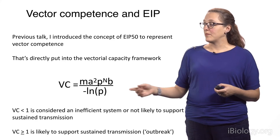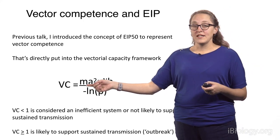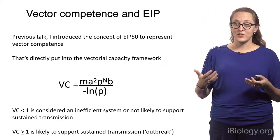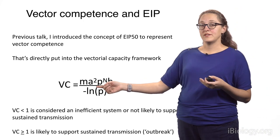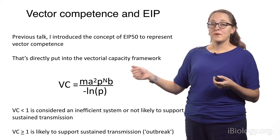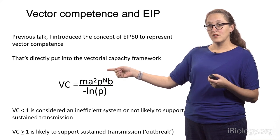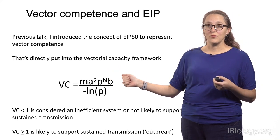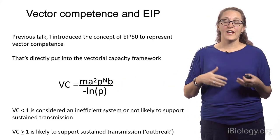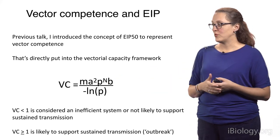Vectorial capacity is here — this is the equation. M is the mosquito density, the relative abundance of mosquitoes to people in a certain system. A is the daily man-biting rate of the mosquito population. P is the probability of daily survival for the mosquito, and P is raised to the N, which represents the extrinsic incubation period. B is the vector competence, which is the proportion of mosquitoes that are transmitting, given exposure, at a certain extrinsic incubation period.